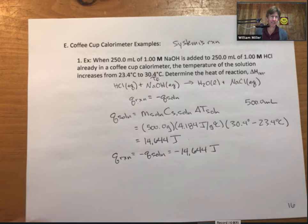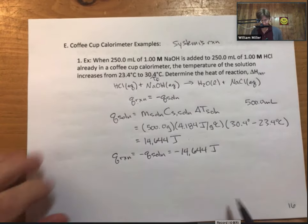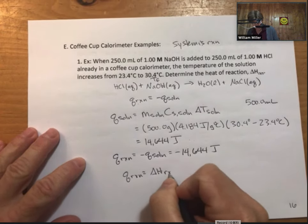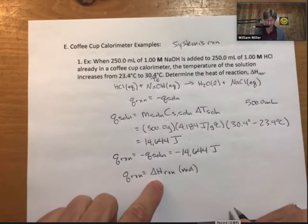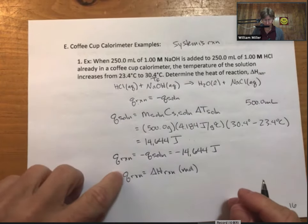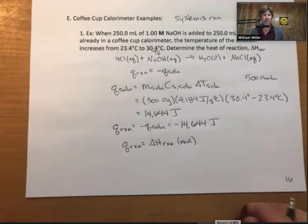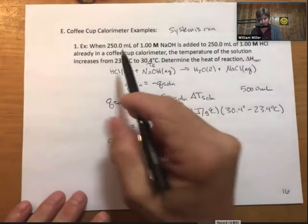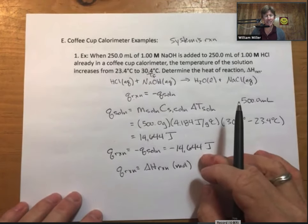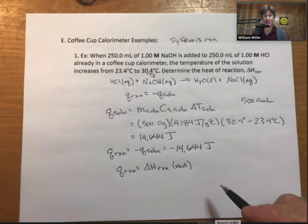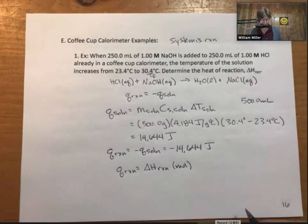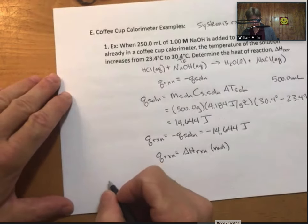So q reaction is minus 14,644 joules. Q reaction equals minus delta H reaction times moles reacted. We still have to find our moles but we have our q reaction. We're looking for our delta H reaction, so let's find our moles now. We have the same volume and molarity of each of these, so each of our reactants is limiting. If we find the moles of one, it'll be the moles of the other.